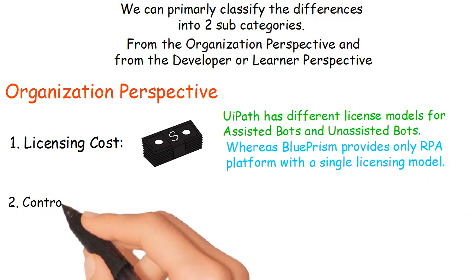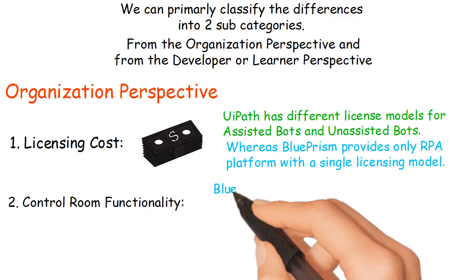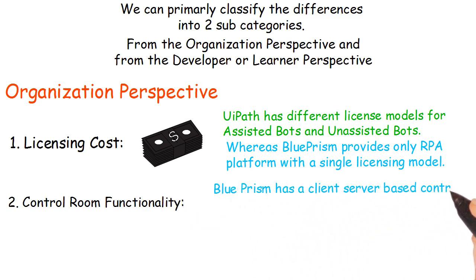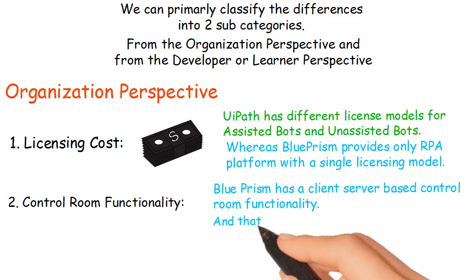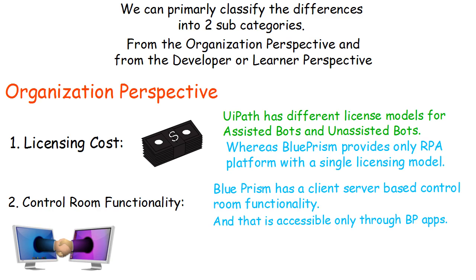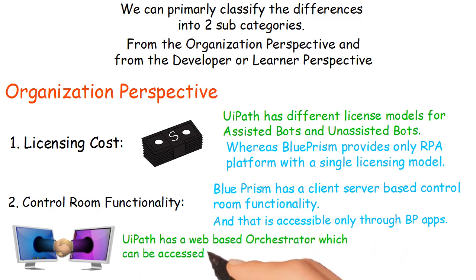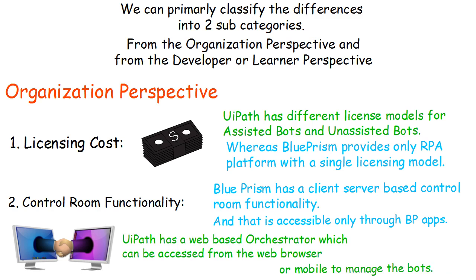Number 2: Control Room Functionality. Blue Prism has a client-server based control room functionality that is accessible only through BP apps. The Developer Studio and the control room are bundled within the same client software. UiPath has a web-based orchestrator which can be accessed from a web browser or mobile to manage the bots.